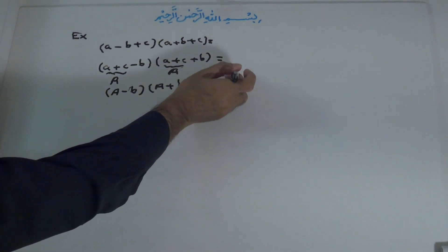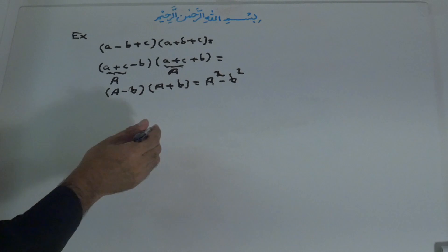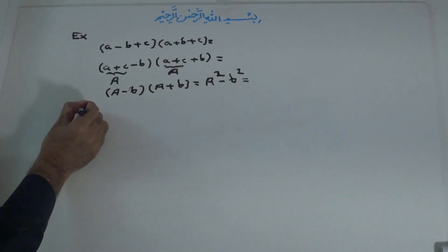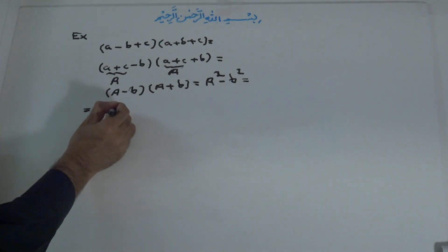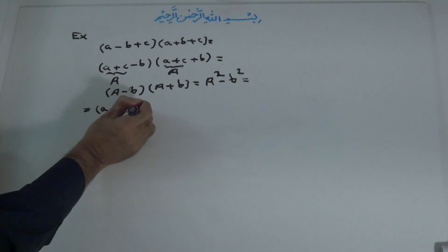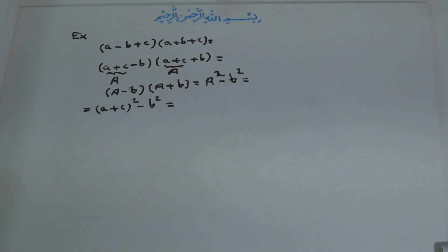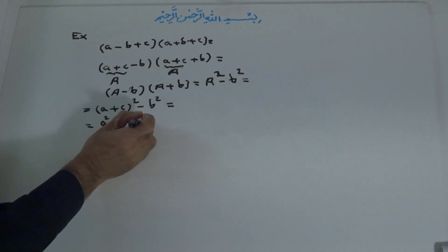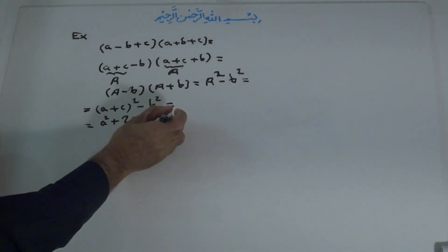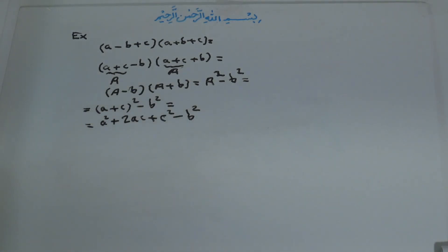According to identity number five, capital A minus b times capital A plus b equals capital A to the power of two minus b to the power of two. We plug back in the original value of capital A, which is a plus c: so we get a plus c to the power of two minus b to the power of two. By identity number one, a plus c to the power of two equals a to the power of two plus two ac plus c to the power of two, minus b to the power of two. This is the result.